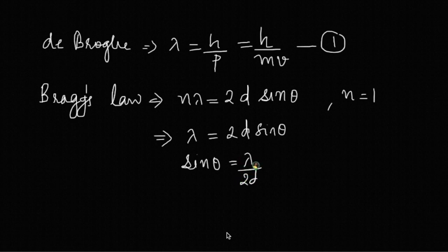Here 2d is the width of that slit, which in our case we have taken as delta x, so this is lambda by delta x. Here theta is very small, so sin theta can be approximated to theta. Therefore, theta equals lambda by delta x. Let's call it equation 2.